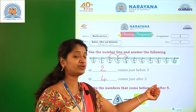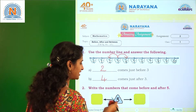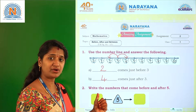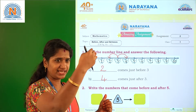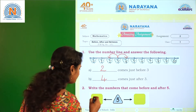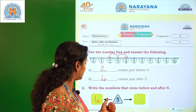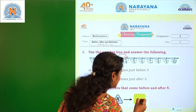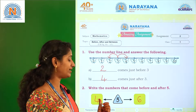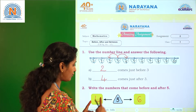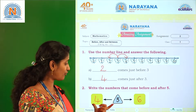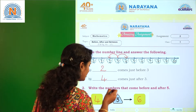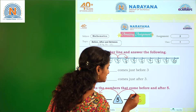Write the numbers that come before and after 5. We need to write both the before number and the after number. Before 5, using backward counting, is 4. After 5, using forward counting, is 6. So 5 is between 4 and 6, the number before 5 is 4, and the number after 5 is 6.